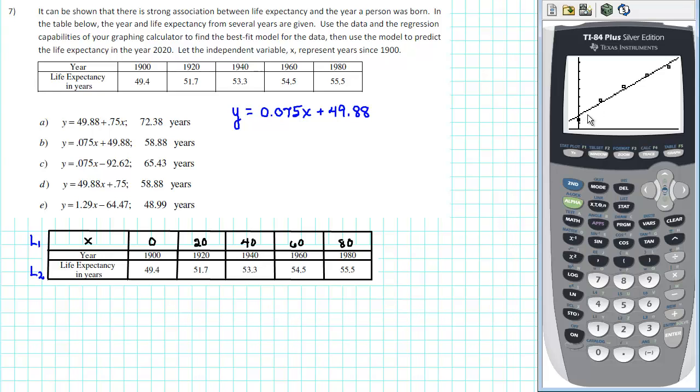Because the life expectancy has been increasing at a decreasing rate, it would appear that if we use this linear model to predict the life expectancy in the future, that estimate will be an overestimate for the life expectancy.